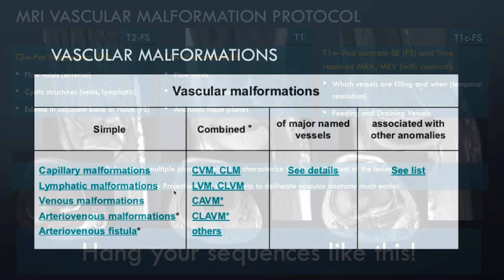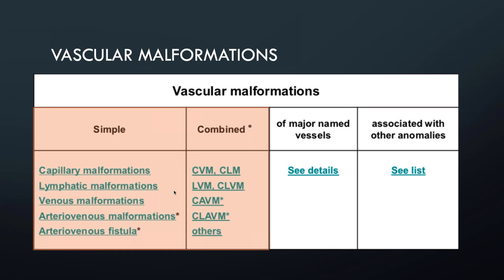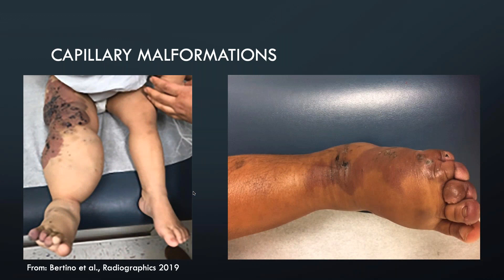The first group we'll discuss are simple and combined anomalies. Something we commonly encounter in a clinic might be capillary malformations, very frequently presenting as port wine stains. They tend to be among the more common anomalies and are often associated with other underlying malformations deeper to these structures, within muscle, soft tissue, or bone. I often think of capillary malformations as the tip of the iceberg. Dr. Chaudhary, how do you approach a child who comes into clinic with a capillary malformation and what are your next steps?